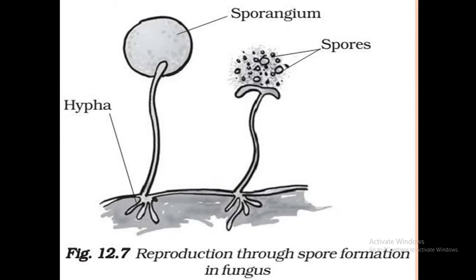A common question: what will each spore cell give if placed on a wet surface? It will give a new fungus. The type of cell division in spore propagation is mitotic division, because the resulting organisms are identical to the parent cell.